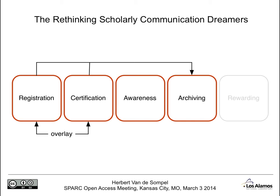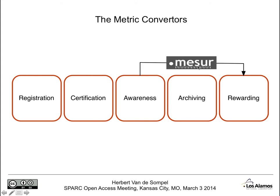Obviously all of that information also needs to flow into the archiving function. Then came the metric converters, and with them the understanding that once scholarly communication happens in a global network environment, there's so much more information we can extract that could be used to create a whole range of new metrics. In the MESUR project that I did with Johan Bollen, we looked at download information of papers and tried to figure out whether meaningful metrics about the performance of authors, journals, and articles could be derived from that. The finding was yes — meaningful metrics could be derived from download information, so information could flow from the awareness function, about reading and downloading papers, into the rewarding function.